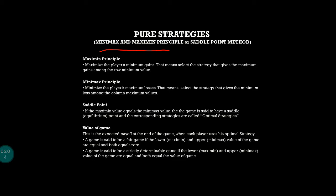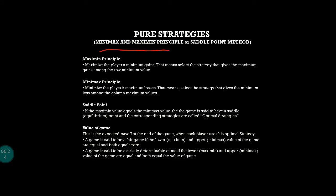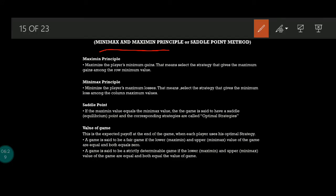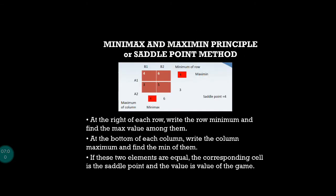A fair game is one in which the saddle point is zero, meaning the value of the game is zero. If the value of the game is anything other than zero, it is called a strictly determinable game. So: saddle point is the intersecting point of minimax and maximin values; value of the game is the payoff when each player uses the optimal strategy; and if that value is zero it is a fair game, otherwise it is a determinable game.